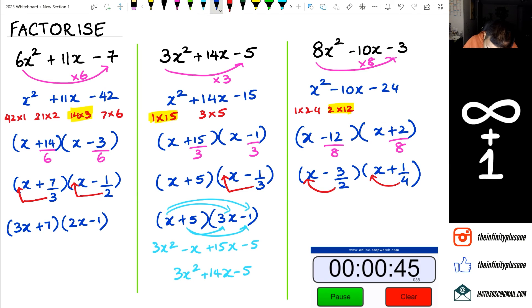These numbers are going to come in the front which means I'm going to get 2x minus 3, 4x plus 1. Bang!